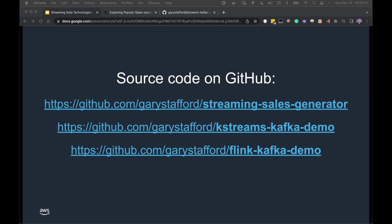Source Code: there are three open-source GitHub projects containing all the source code. First, the Streaming Sales Generator project contains the Synthetic Sales Data Generator Python script, the two Docker Swarm stacks, and the Spark Structured Streaming PySpark scripts. Second, the KStream Kafka Demo GitHub project contains the Kafka Streams Java source code — already compiled into a Docker container, so you don't need to compile it yourself. Third, the Flink Kafka Demo project contains Apache Flink Java source code with a pre-built JAR file that you upload into the Flink UI.